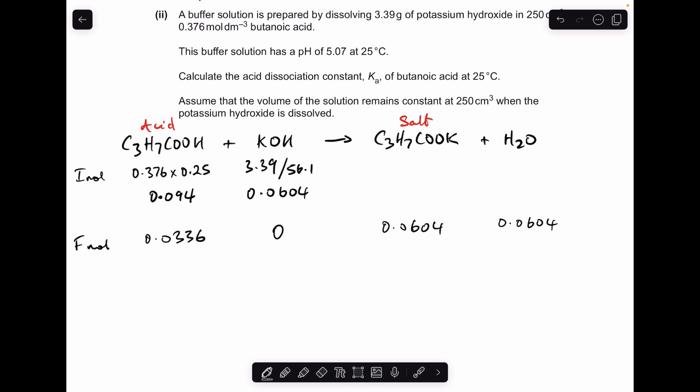And then the next thing we need to do is turn those moles into concentrations. They're both in 0.25 decimeters cubed so I just need to divide the moles by the volume. So that's coming out at 0.134 moles per decimeter cubed of acid, 0.242 moles per decimeter cubed of salt.